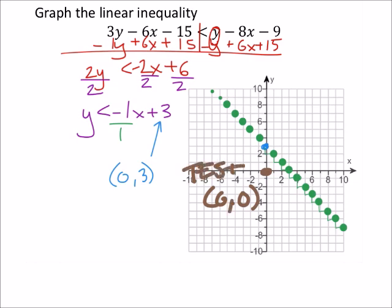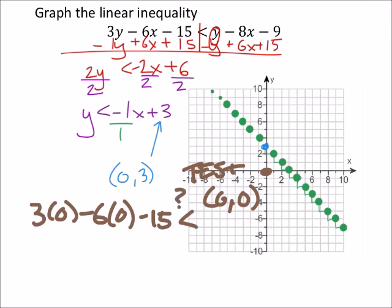And we're going to test that in the original inequality to see if it is true. So I got a 3 times 0. Minus 6 times 0. Minus 15. This should be less than. Again, that's a question mark. 0. Minus 8 times 0. Minus 9.